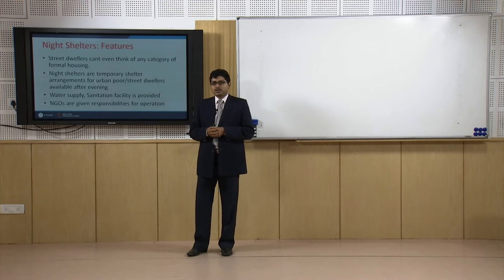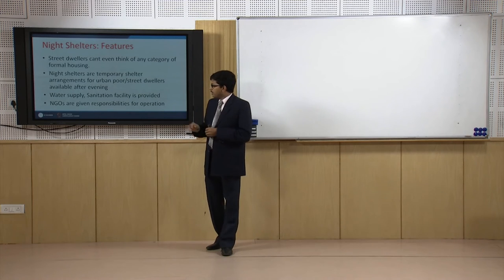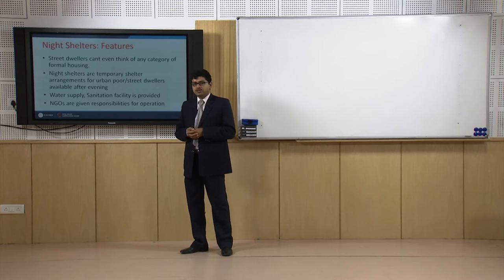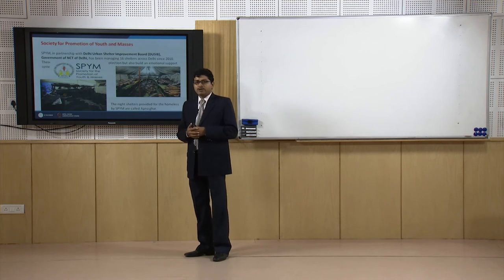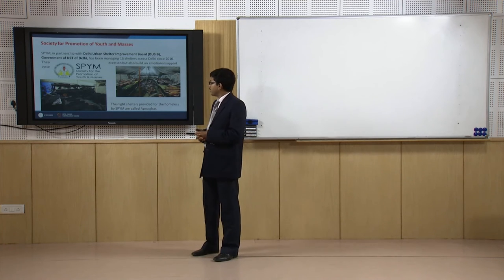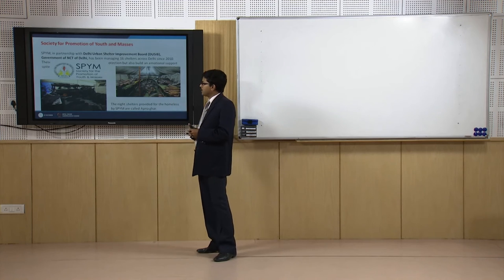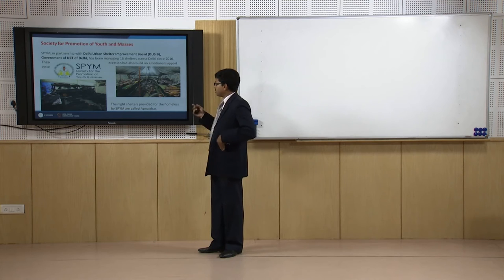During extreme weather seasons like extreme cold or extreme heat, it becomes very crucial to provide adequate facility. We need various NGOs and similar organizations who can run these shelters. For example, in Delhi we have around 500 night shelters, but it may not be possible for city authorities to run all of them. One such example is the Society for the Promotion of Youth and Masses, which is operating and maintaining night shelters under the Delhi Urban Shelter Improvement Board (DUSIB) program under the government of NCT Delhi. Under this, they have been managing 16 night shelters.